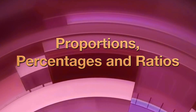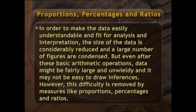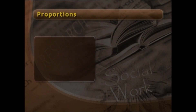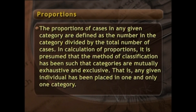Proportions, percentages, and ratios: in order to make data easily understandable and fit for analysis and interpretation, the size of the data is considerably reduced and a large number of figures are condensed. Even after basic arithmetic operations, data might be fairly large and unwieldy, and it may not be easy to draw inferences. However, this difficulty is removed by measures like proportion, percentages, and ratios. The proportion of cases in any given category is defined as the number in the category divided by the total number of cases.